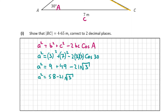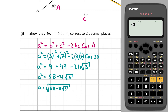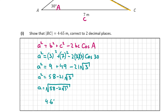We don't want a squared — we just want a. So we bring the squared over to the right-hand side as a square root. Therefore a = √(58 − 21√3). Computing this on the calculator gives 4.650476..., which correct to two decimal places is 4.65. So the length BC = 4.65 meters, which is what we had to show. That's the answer for E part 1, worth 10 marks.